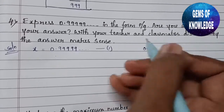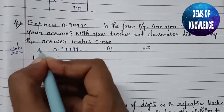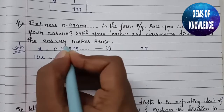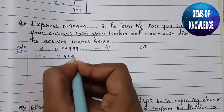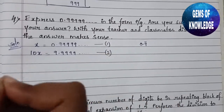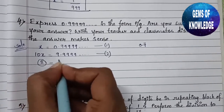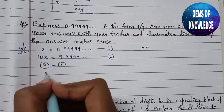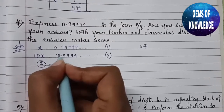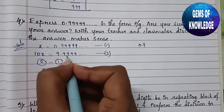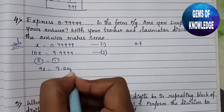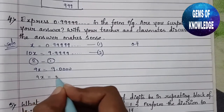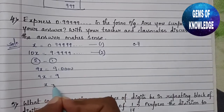Multiplying equation 1 by 10 gives us 10x = 9.99999..., and we consider this as equation 2. Next, we subtract equation 1 from equation 2: 10x − x = 9.9999... − 0.9999..., which gives 9x = 9.0000. So we get 9x = 9.